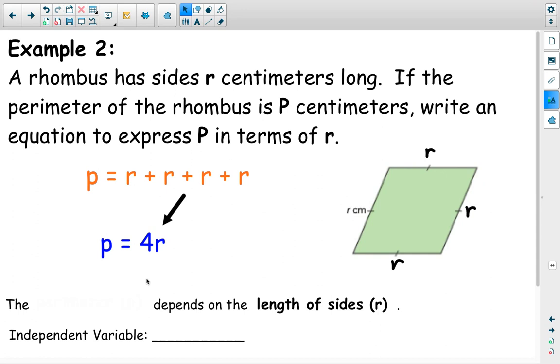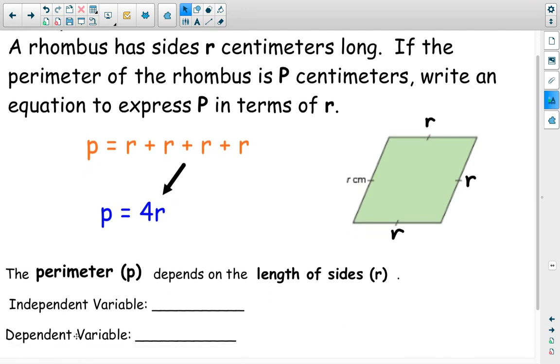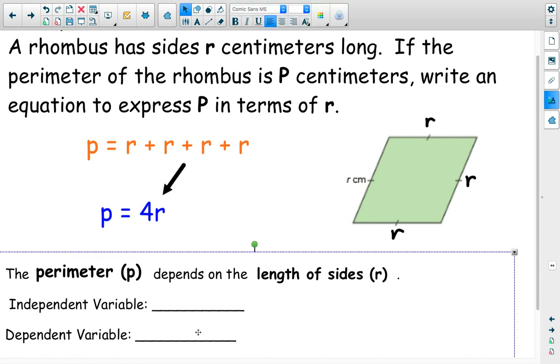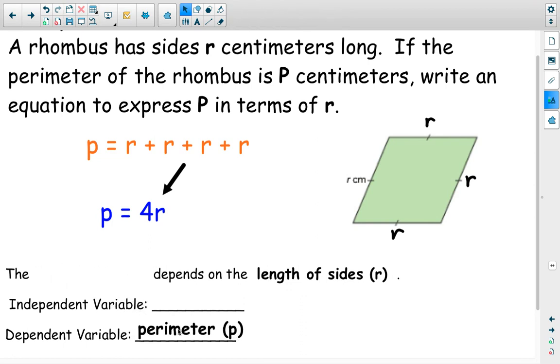Now let's identify what is our dependent and independent variables. Well, the blank depends on the length of our sides. So if the perimeter p depends on the length of the sides, then the perimeter must be the dependent variable. And you would fill that in here. And the independent variable, it's depending on it. So it's the cause, essentially. Whatever we end up placing or substituting for r, that is going to let us know what the perimeter is. So the length of the sides or r, just the letter r, would be the independent variable. And p would be the dependent variable. And that is it for today's notes.